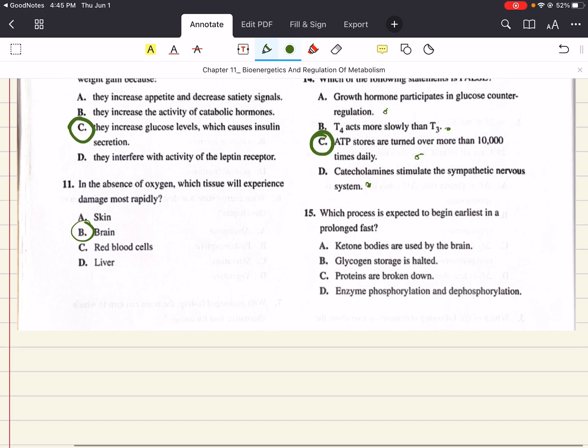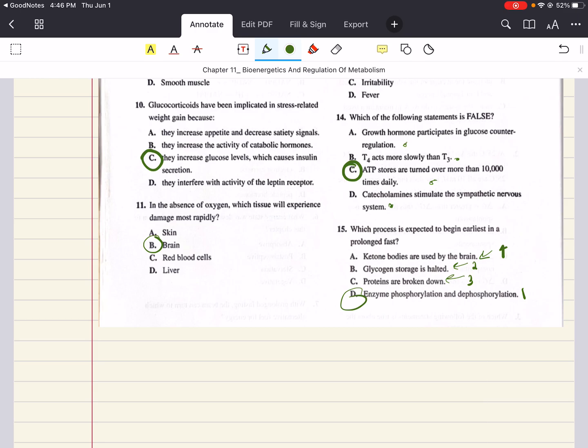Last but not least, which process is expected to begin earliest in a prolonged fast. A prolonged fast is characterized by an increase in glucagon, which accomplishes its cellular activity by phosphorylating and dephosphorylating metabolic enzymes. And that's going to be answer choice D. Now B says glycogen storage is halted. That's after, and this requires enzyme regulation by glucagon to occur. Then later in that post-absorptive state, you can have protein breakdown. And then finally that's answer choice C. Eventually then with starvation, ketone bodies will be formed. So if you're going to number this in what happens first, second, third, fourth, it's one, two, three, four. But the answer to 15 is D.